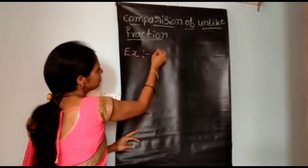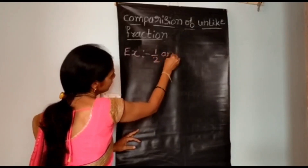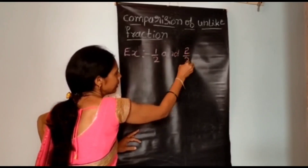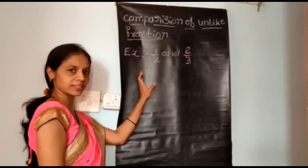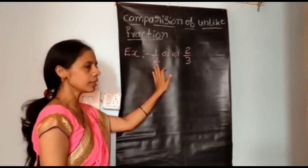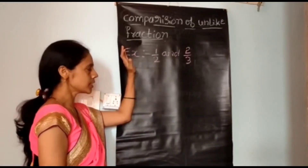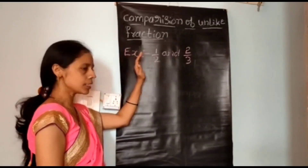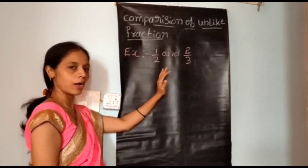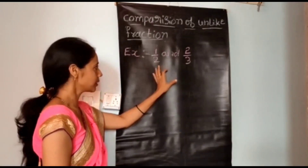Example: 1/2 and 2/3 are two unlike fractions because their denominators are different. We can also compare these two fractions by first converting unlike fractions into like fractions, then comparing.